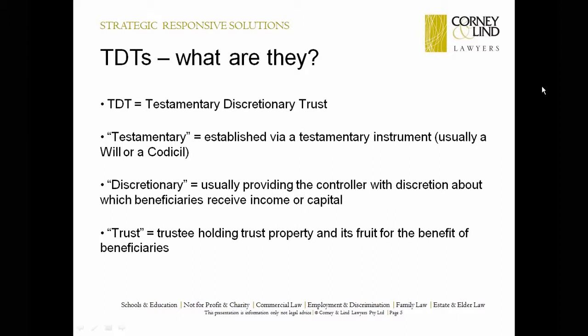TDTs — what are they? Testamentary discretionary trusts. It is testamentary because it is established via a testamentary instrument, that is a will or a codicil. It is discretionary because they usually provide the trustee with discretion about which beneficiaries of the trust receive the income or the capital. And they are called a trust because the trustee holds the property — which could be a share of your estate — and the fruit of that property, that is its net income, for the benefit of the beneficiaries that are named in the trust instrument, which is embedded in your will.